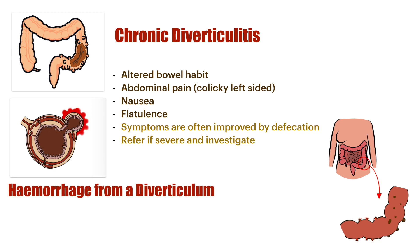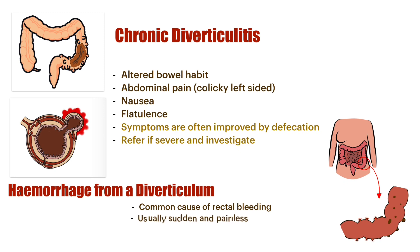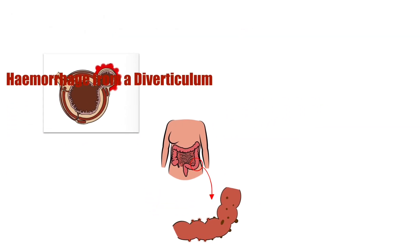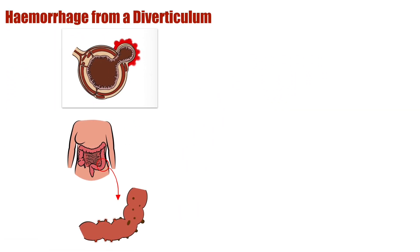Another complication is hemorrhaging from a diverticulum. This is a common cause of rectal bleed — usually sudden and painless. If the bleeding is not settling down and it's quite a significant amount of blood, it's an emergency. The patient needs to be admitted and properly assessed. These are important complications of diverticular disease.